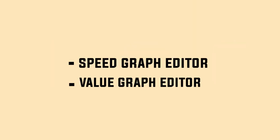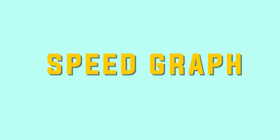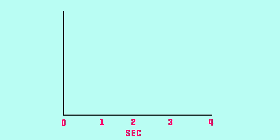We edit two types of graph editor: the speed graph editor and the value graph editor. We edit both the speed and value graph editor. First, we will look at the graph — the seconds and the pixels. Now we will see the text animation.